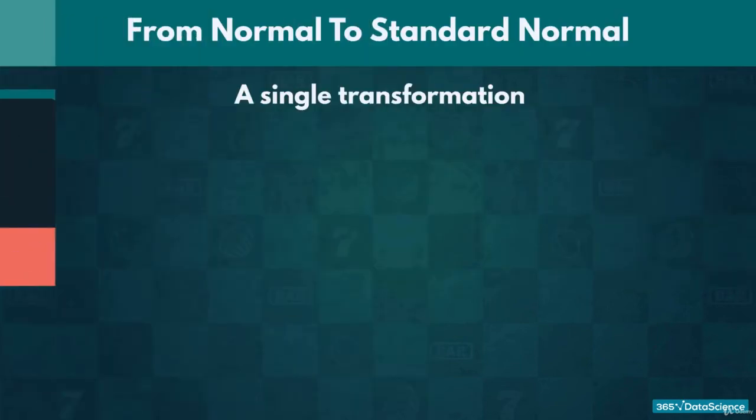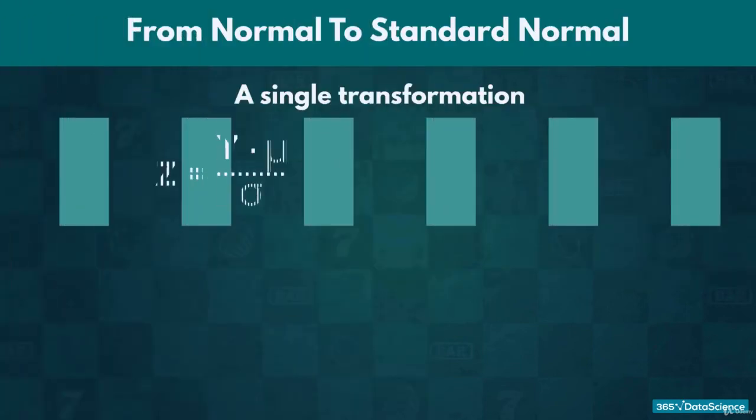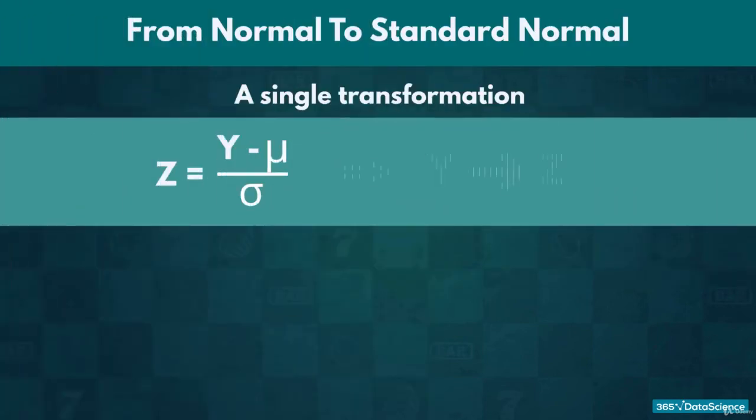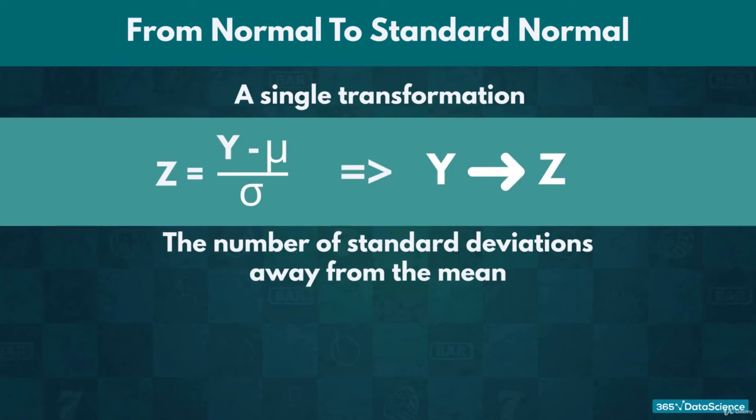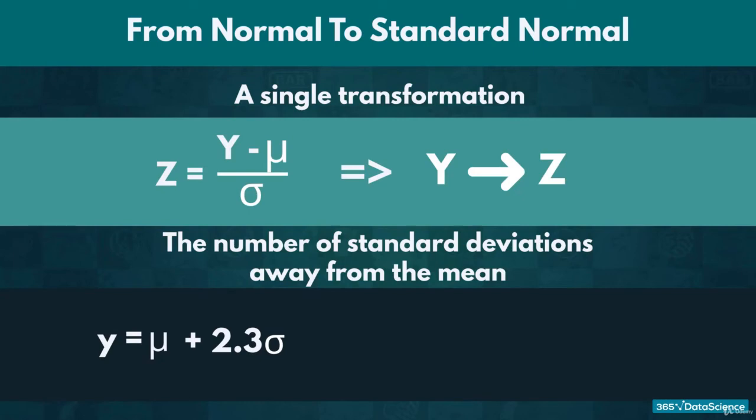Amazing! Applying this single transformation for any normal distribution would result in a standard normal distribution, which is convenient. Essentially, every element of the non-standardized distribution is represented in the new distribution by the number of standard deviations it is away from the mean. For instance, if a value Y is 2.3 standard deviations away from the mean, its equivalent value Z would be equal to 2.3.